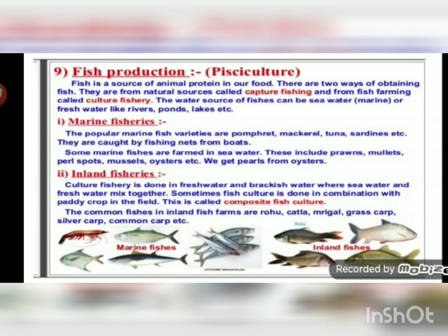Fish production — also known as pisciculture because the scientific name of fish is Pisces — is the cheapest and very important source of protein in our food. There are two ways of obtaining fish: from natural sources using nets, which is called capture fishing, and from artificial ponds or reservoirs where seeds of fish are put and raised, which is called culture farming. The water sources for fish can be sea water (marine water) or fresh water like rivers, ponds, and lakes.